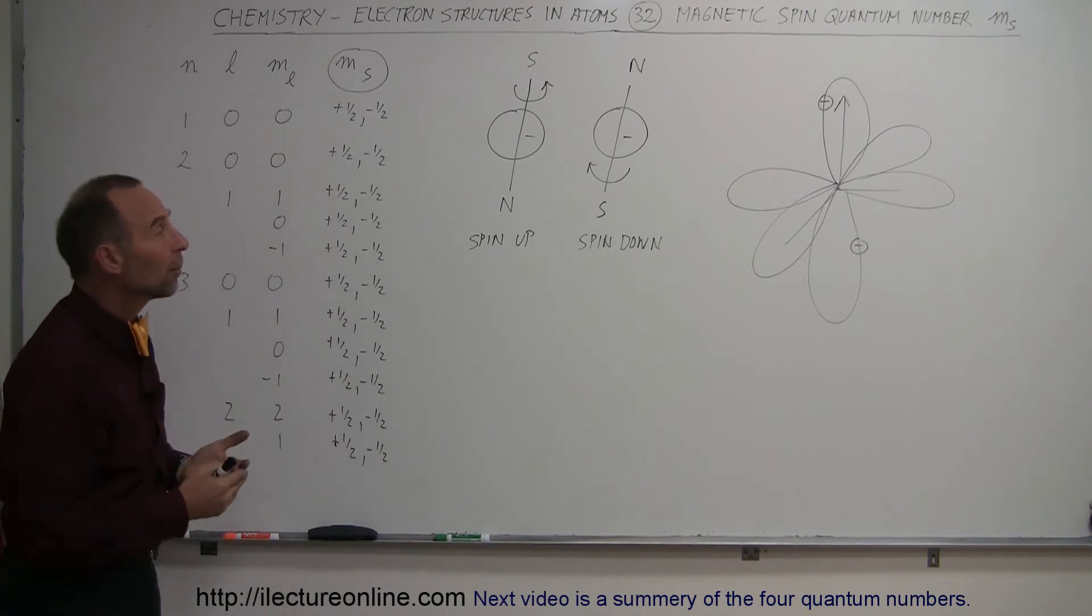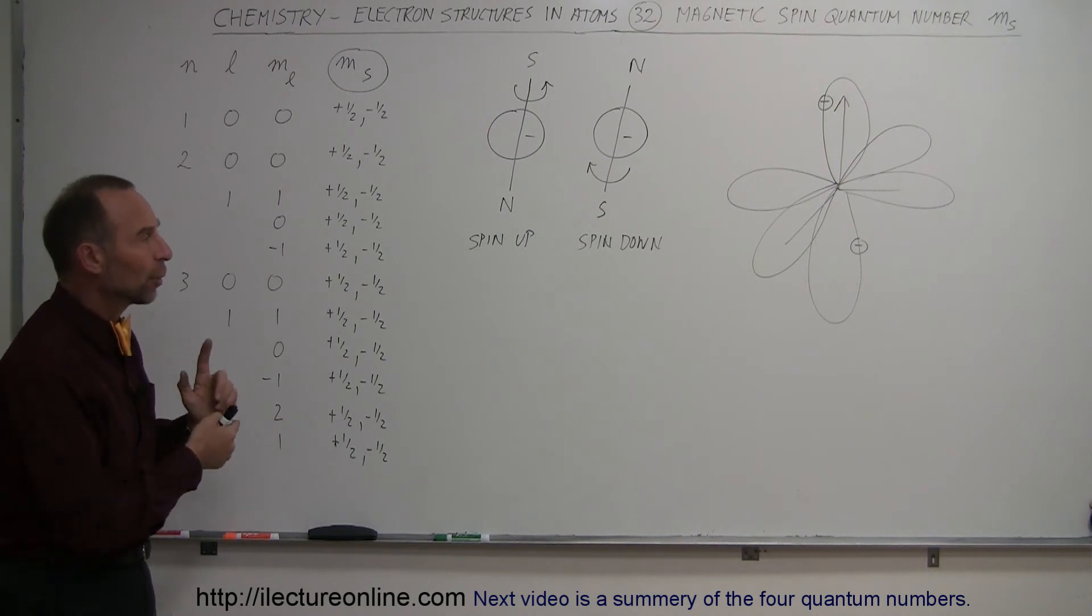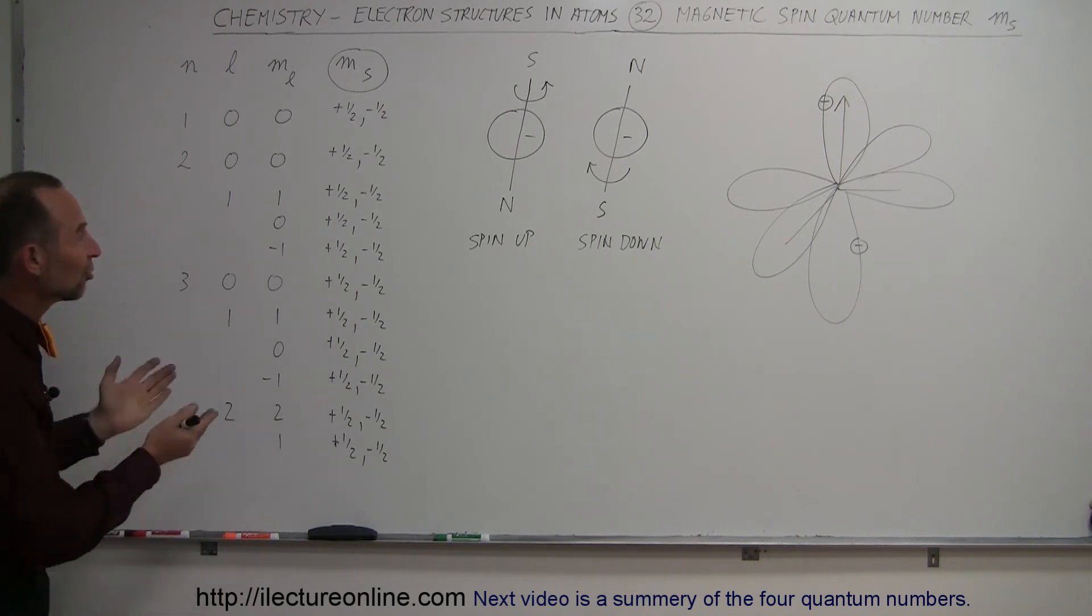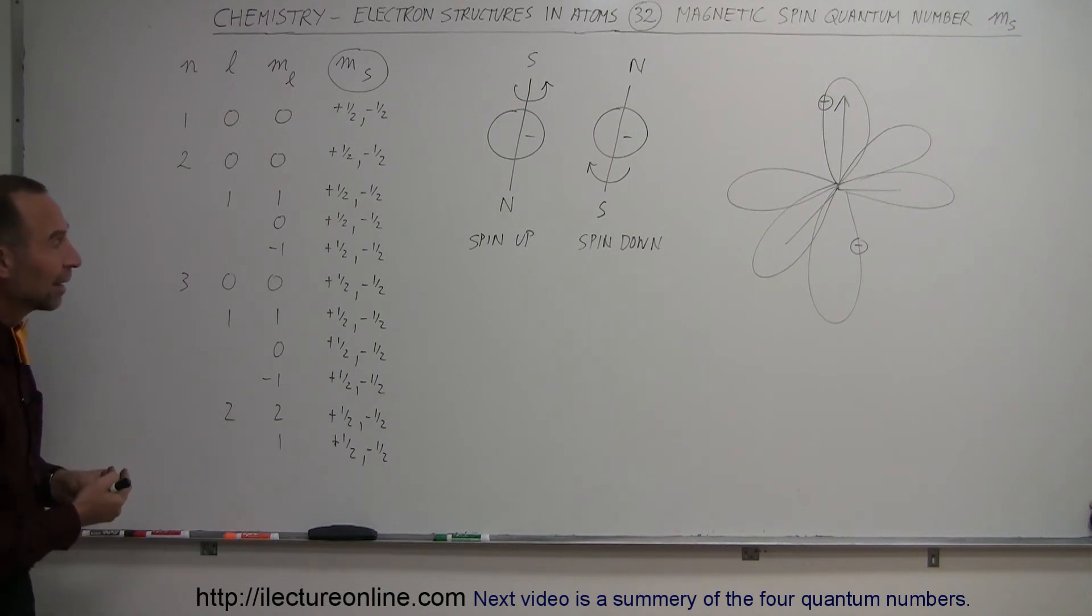This last property, the spin quantum number, allows the electrons to double up in each orbital. They can only coexist in the same orbital if they're in opposite spin. So there's the fourth of the four quantum numbers defining the existence of the electrons and how they behave in the orbitals around the nuclei of atoms.